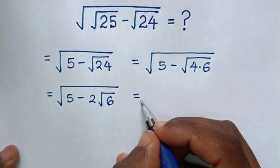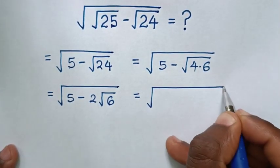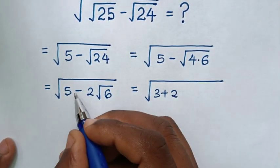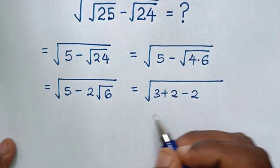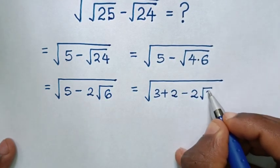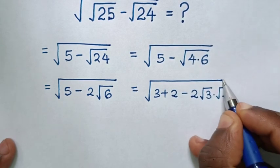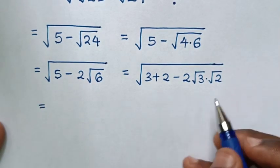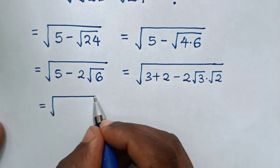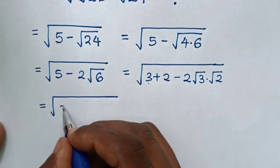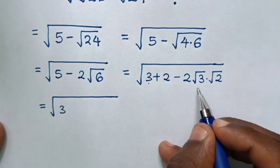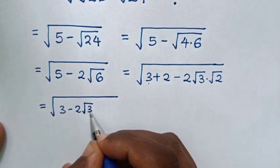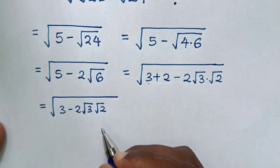Then it will be equal to square root of — 5 is the same as 3 plus 2 — then minus 2, and square root of 6 is the same as square root of 3 times square root of 2. In the next step, we will rearrange this, so it will be square root of 3, then minus 2 times square root of 3 times square root of 2, then plus 2.